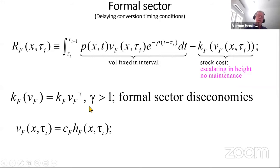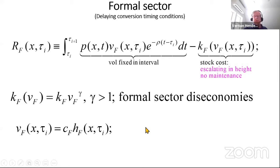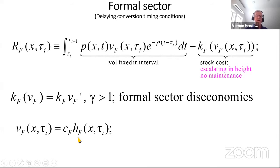In the formal sector, over one interval of development, you choose a fixed volume. There are diseconomies in building more intensively — that is, building higher — from the engineering literature. As you build higher, you need more floor space devoted to elevators and staircases, and you need better construction to bear the load, using steel-reinforced concrete rather than plain concrete. We assume a fixed cover-to-area ratio as a simplification.